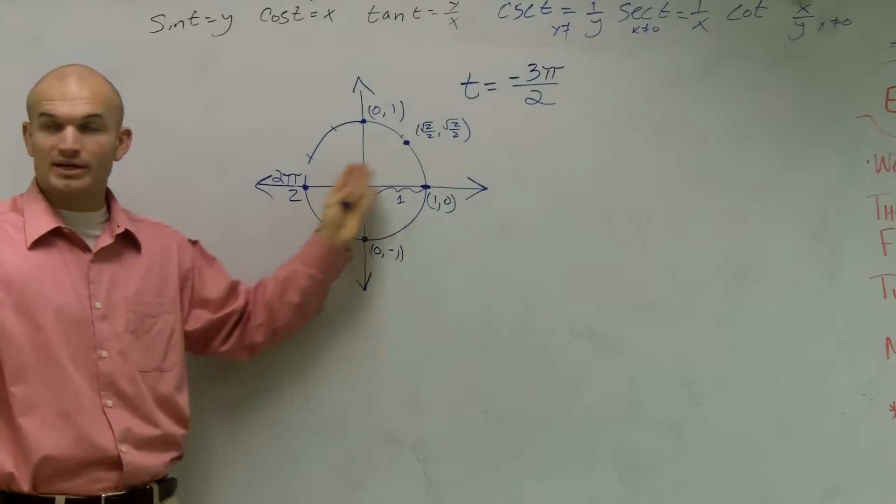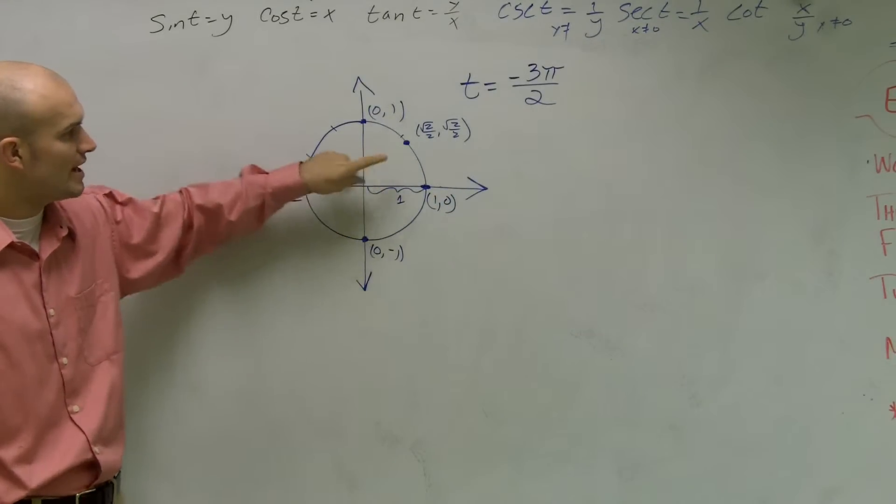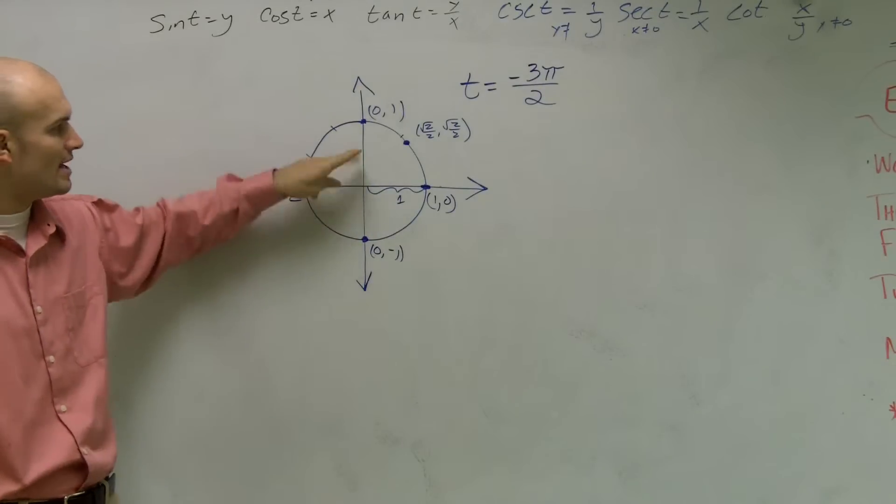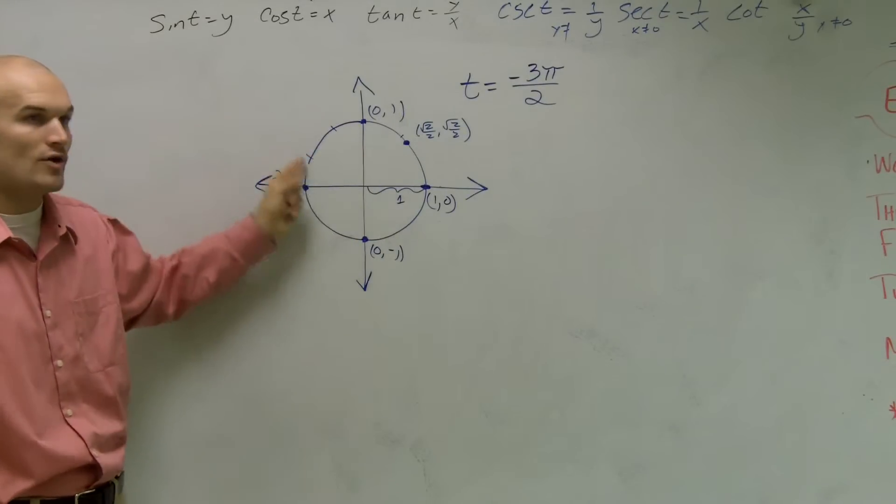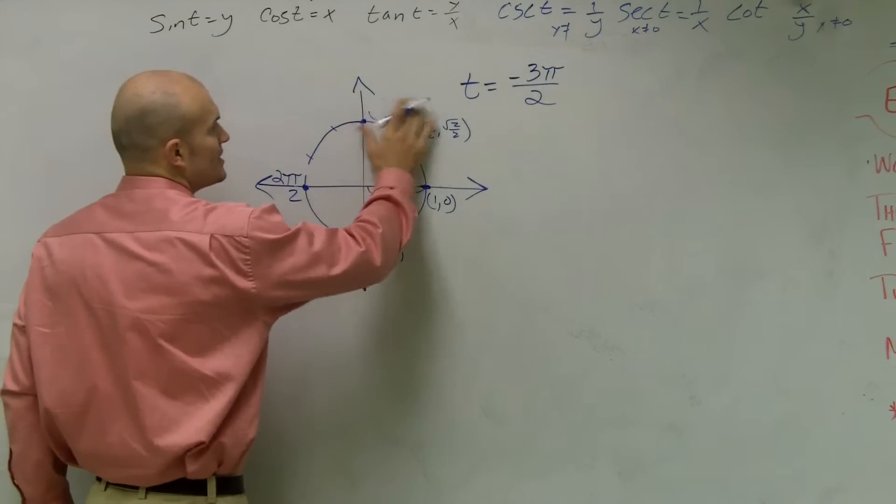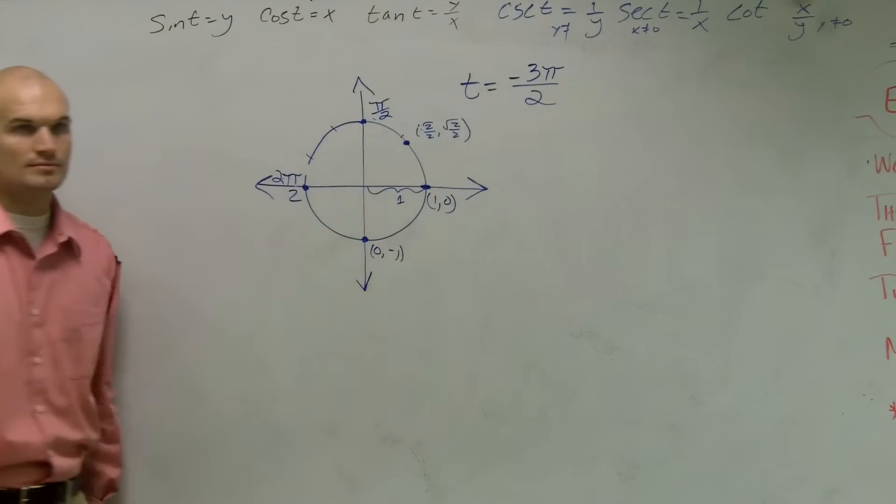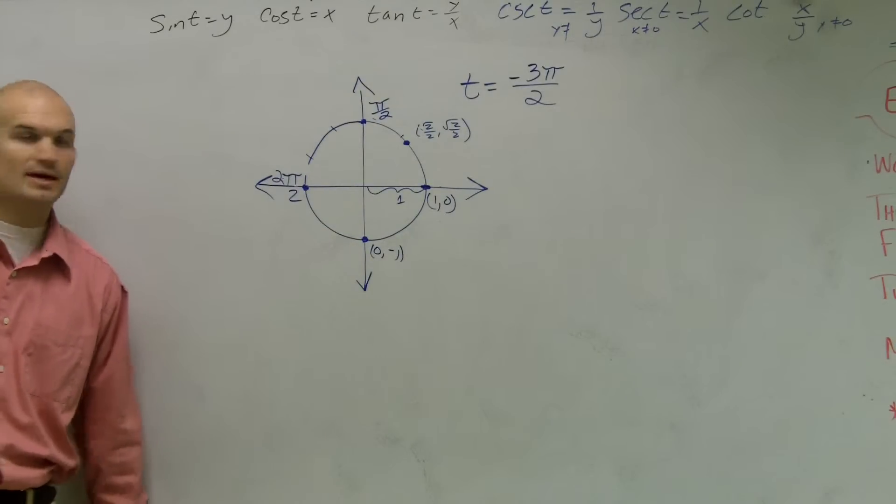If it was 4, I'd split it into 4's. But since it's halves, I'm just going to split into halves. Well, you already know that this circle actually by using the y-axis is already split into halves. Because what I'm trying to show you is if that's 2 pi over 2, that's pi over 2. You guys see that?